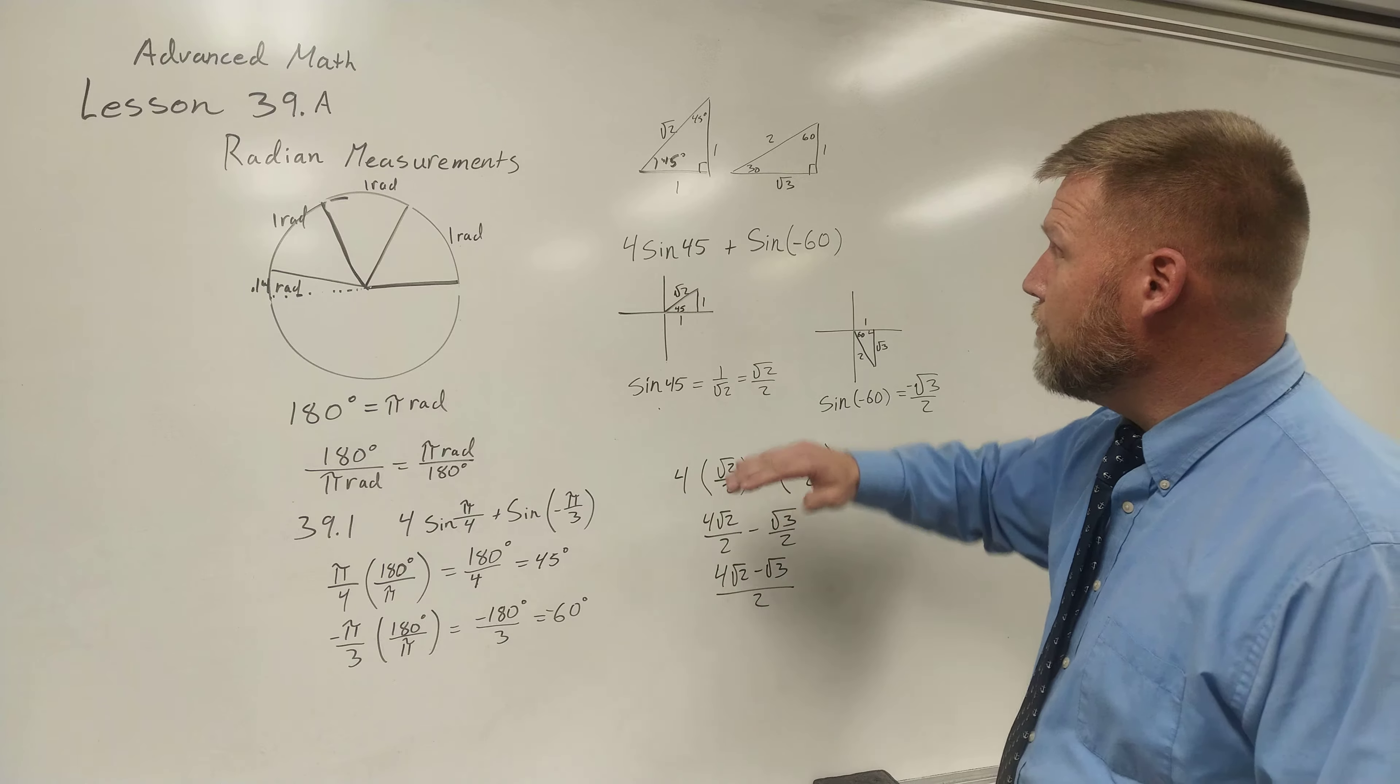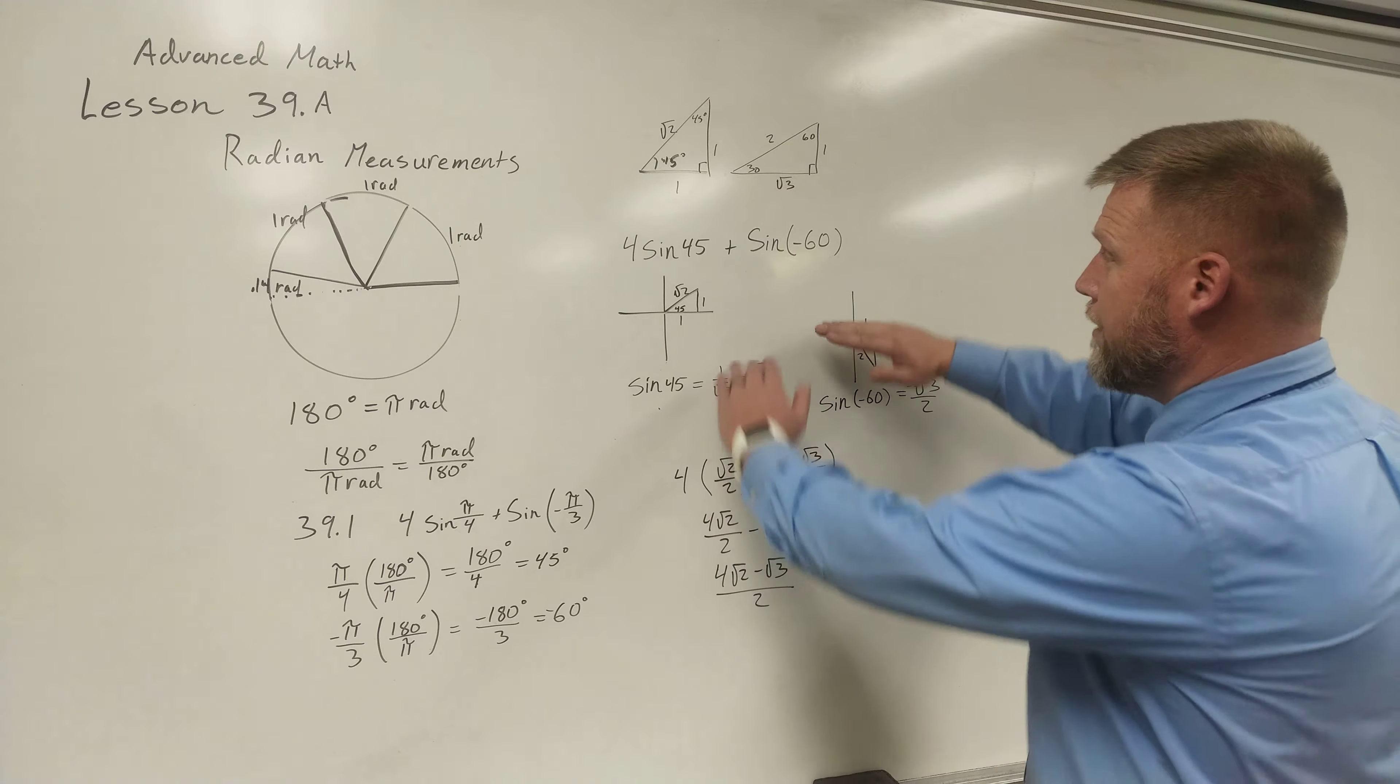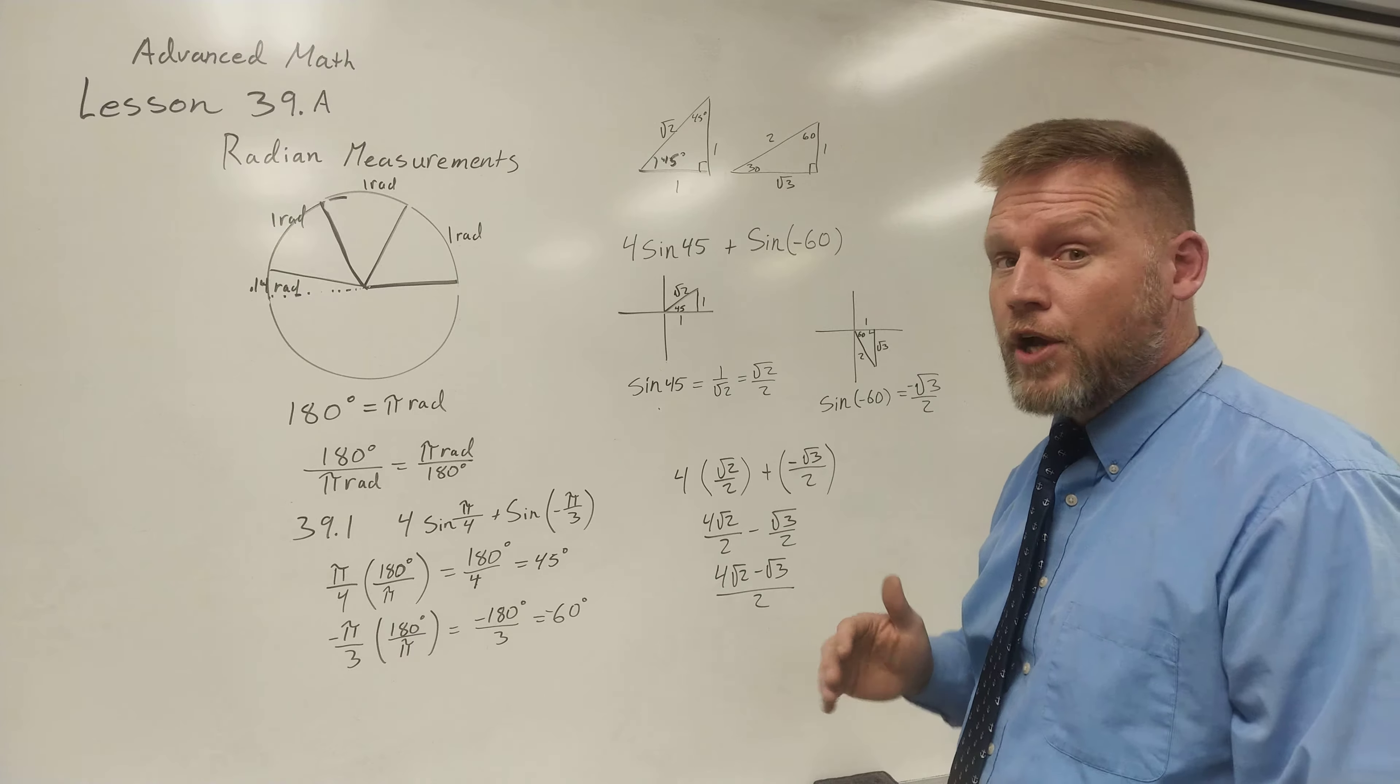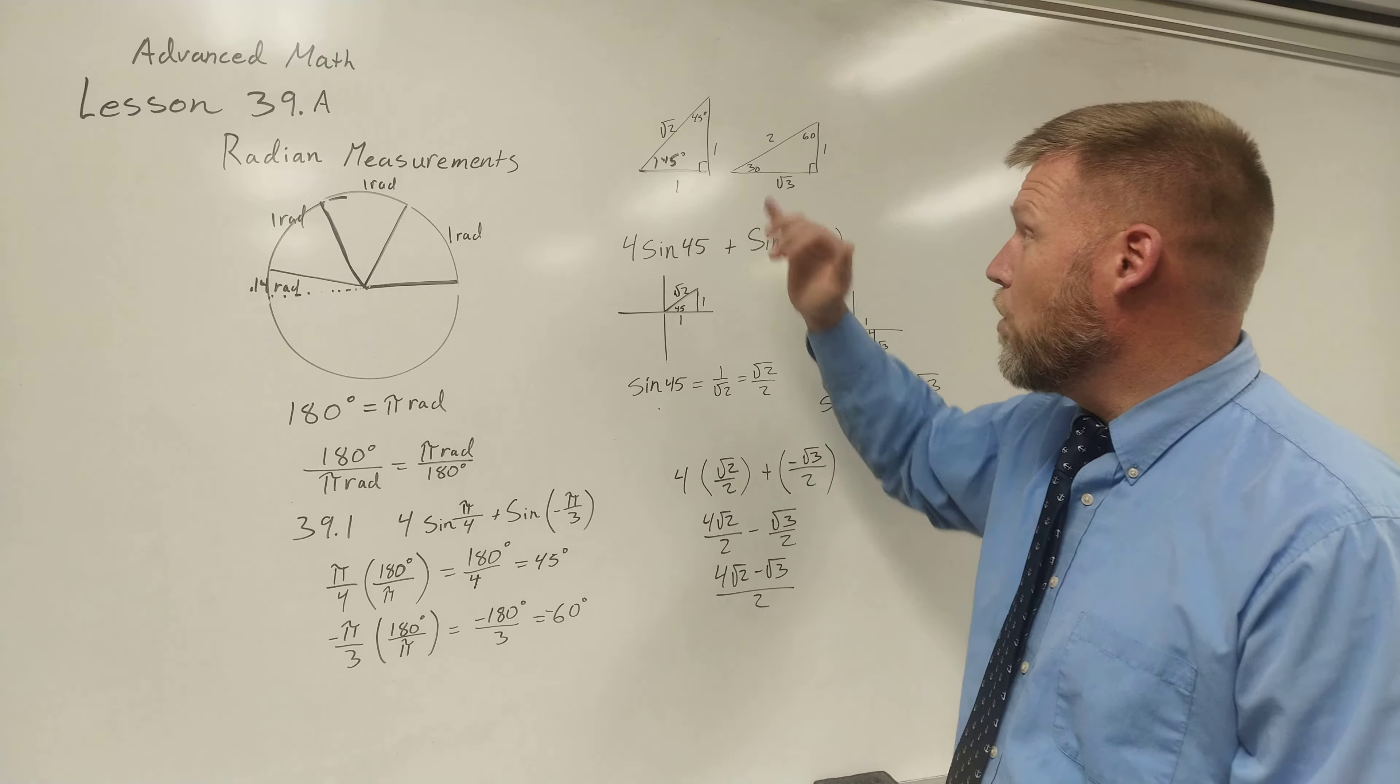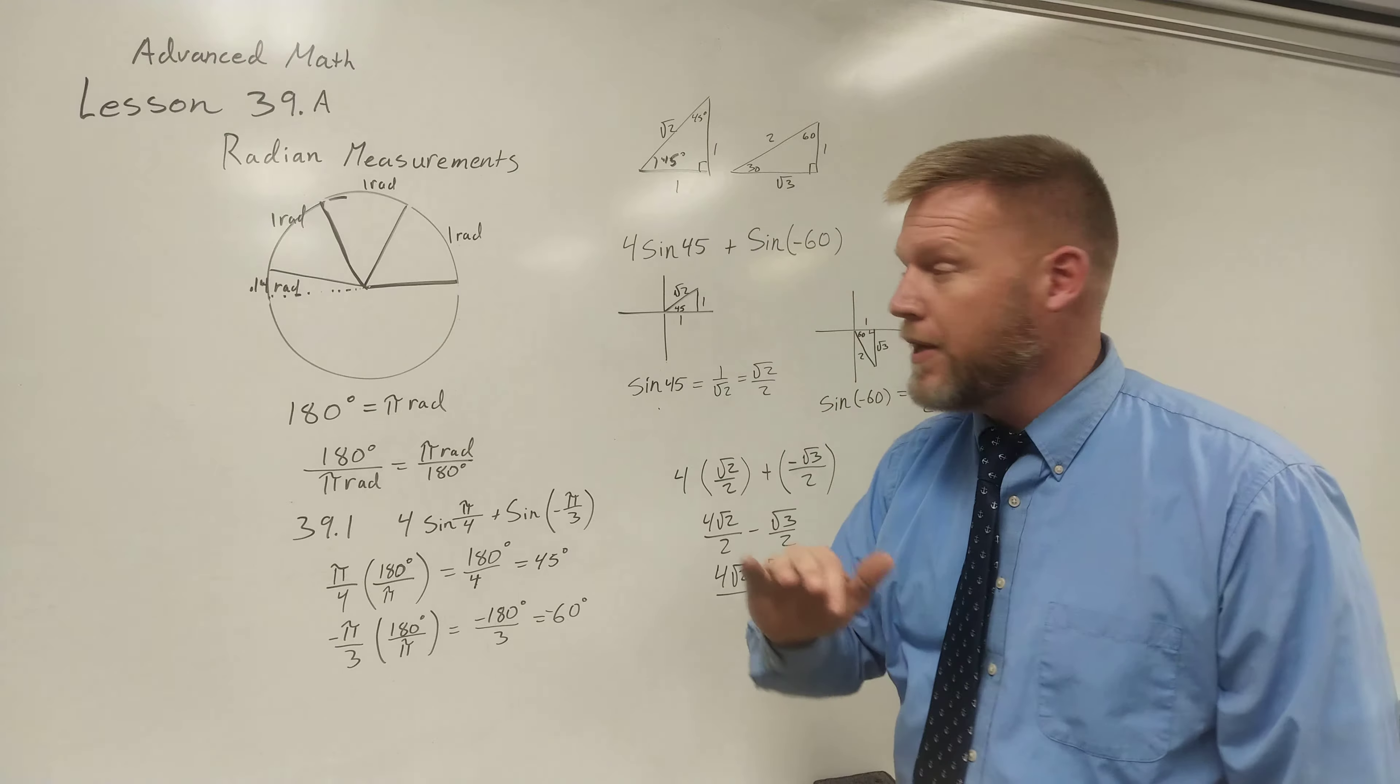This problem now looks like this because I'm substituting in 45 and negative 60 for each of my π/4 and negative π/3. And I get this equation right here. This one is one that we've already dealt with in this course. So this shouldn't be a surprise to us. I went ahead and put our special triangles up here. We should have those memorized at this point. A 1, 1, √2 and a 1, 2, √3.